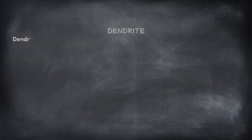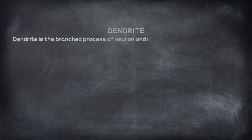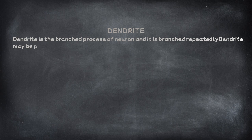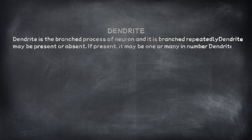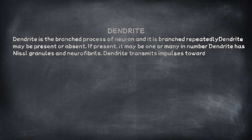The dendrite is the branched process of the neuron, and it branches repeatedly. A dendrite may be present or absent; if present, it may be one or many in number. Dendrites have Nissl granules and neurofibrils. Dendrites transmit impulses towards the nerve cell body, and are usually shorter than the axon.